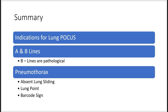In summary, today we talked about indications for lung POCUS. We talked about A-lines and B-lines and what they mean, and that three or more B-lines is pathological. Presence of B-lines can indicate pulmonary edema, pneumonia, or pulmonary fibrosis. If you see B-lines on one side, you're thinking about one-sided pathology such as pneumonia, and if you see bilateral B-lines, you're thinking more about pulmonary edema. We also talked about pneumothorax — suspicion rises if there is absent lung sliding, if you see the lung point, or if you see the barcode sign.